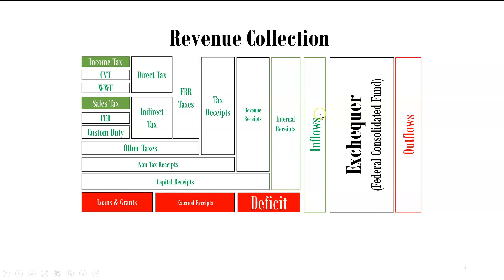All inflows go into the Federal Consolidated Fund. The State Bank of Pakistan holds a bank account which covers all government accounts, and you decide the inflows from there. These are internal and external receipts. Internal receipts include revenue receipts and capital receipts. Revenue receipts are tax receipts and non-tax receipts. Tax receipts are FBR taxes and non-FBR taxes.